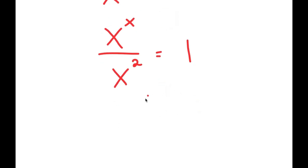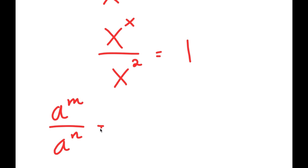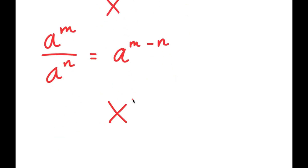Now from here, if I have something in the form a to the power of m over a to the power of n, this equals a to the power of m minus n. So x to the power of x over x to the power of 2 equals x to the power of x minus 2, which is equal to 1.